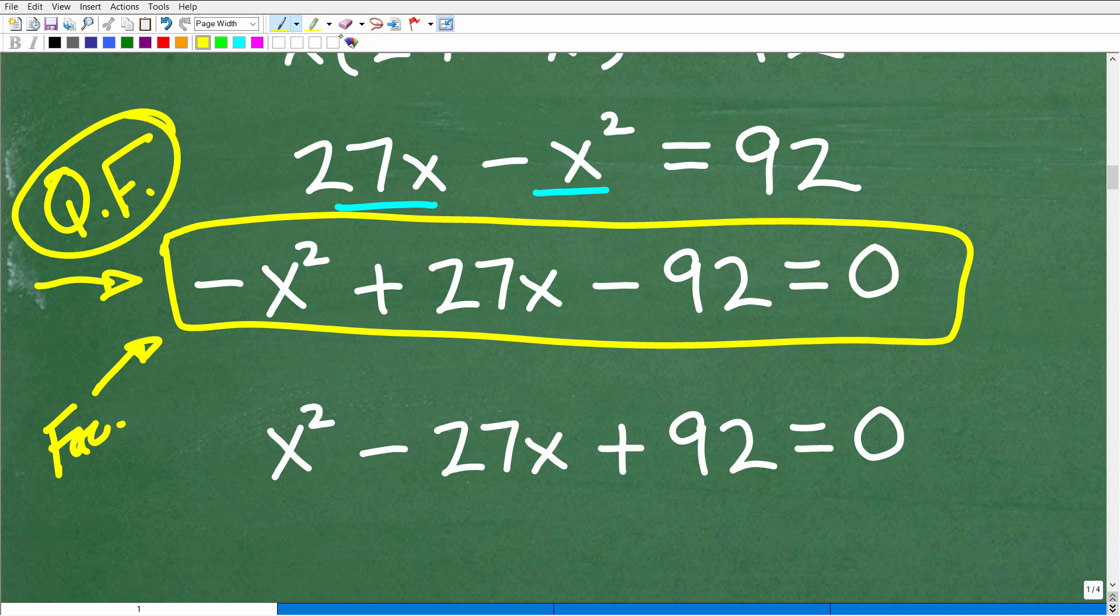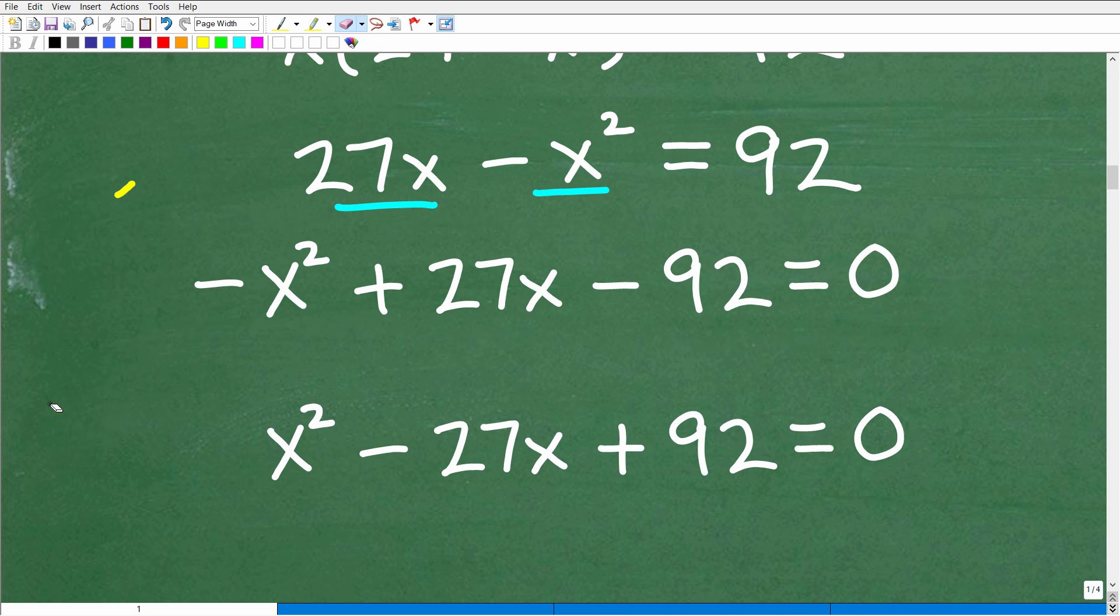Okay. Now, if you cannot factor this, then we'll get into the quadratic formula. Okay. So now before we go any further, some of you might see how I went from here or I went from, I changed the equation from here to this. Now, why did I do that? Well, you see here, we have a negative X squared.